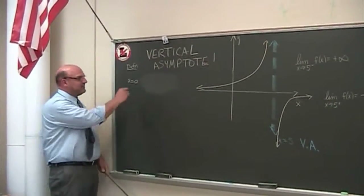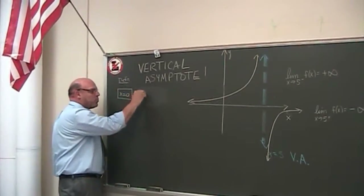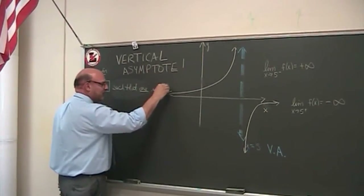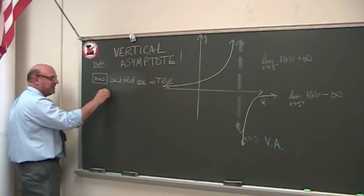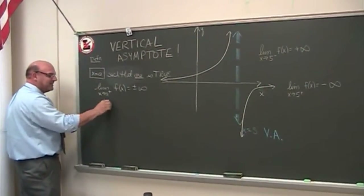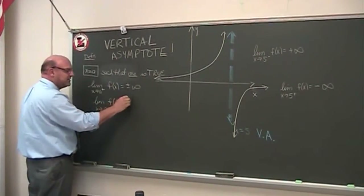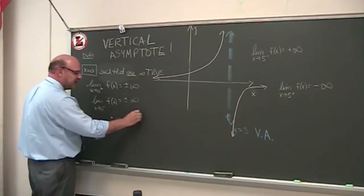Let's review class. The definition of vertical asymptote is a line in the form of x equals a such that one of the following is true. The limit as x approaches a from the right has to equal plus or minus infinity, or the limit as x approaches a from the left of the function does the same thing. If one of these holds, we say therefore x equals a is a VA, vertical asymptote.